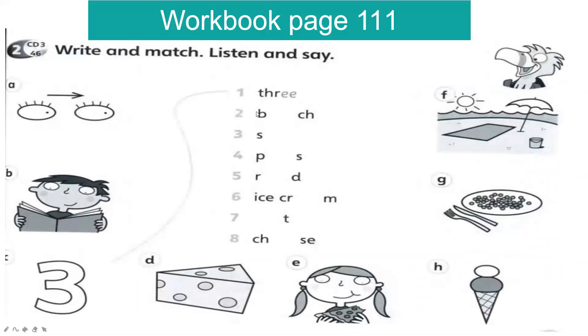Let's continue with our workbook on page 111. Write and match, listen and say. So boys and girls, ready? Okay, first 'three.' We have 'three' here. Next will be 'beach.' This is the beach. Number three is 'sea.'